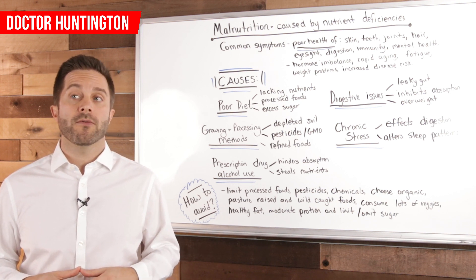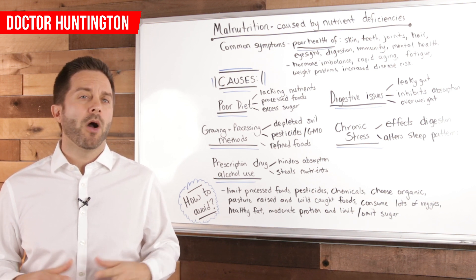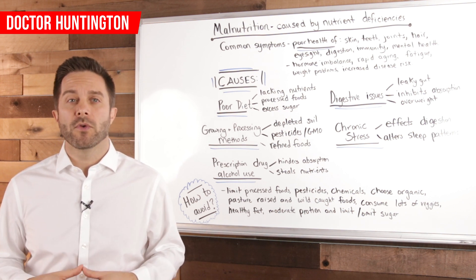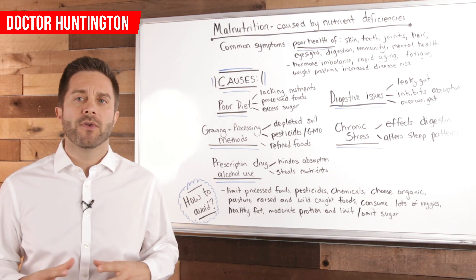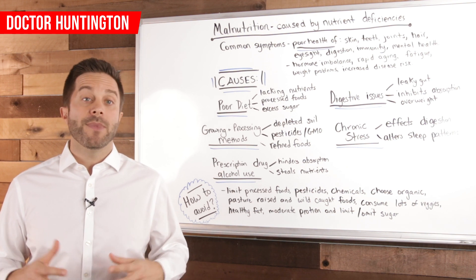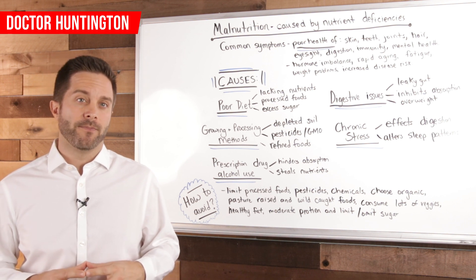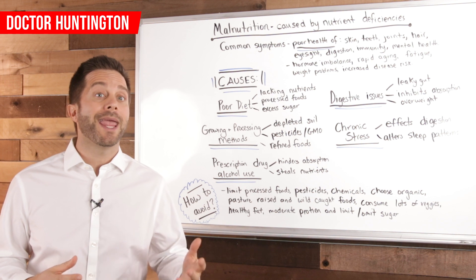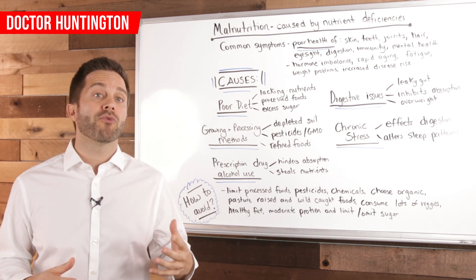Nutritional deficiencies occur for various reasons, and the number one cause is a poor diet. Often it's not consuming enough of the healthy nutrient-dense foods, or too many empty calories, and this is at the root of the massive obesity epidemic that exists today. Having proper and adequate nutrients allows your body to work the way it's designed to function. The nutrients are your fuel — they support the processes that slow aging, affect how your genes are expressed, and lower your risk for disease.